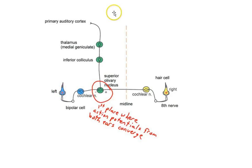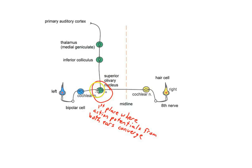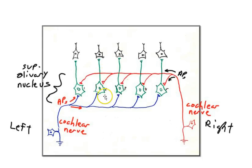This is the first place where information from both ears converges: the hair cells in the inner ear of the left ear respond to vibrations, send action potentials, and they converge in this olivary nucleus. Researchers were interested in determining how the neurons in the superior olivary nucleus were arranged — perhaps in a way that can detect a delay in activity between the right and left ear. Much of this research was done on birds of prey.